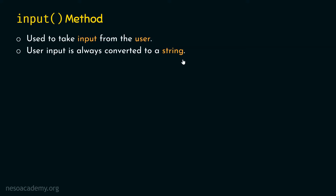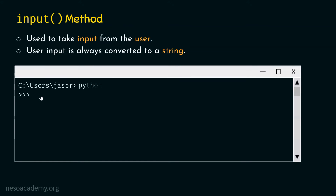Let's understand the concept of input method and how it works with the help of an example. For this, we need to open our command prompt and activate the Python interactive shell. Let's say the requirement is to receive some name from the user. We can call the input method, and it will return the user input. We can store that in a variable — let's together type this command: name equal to input.